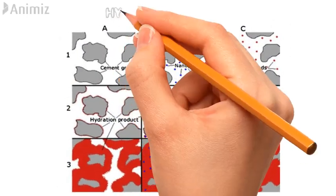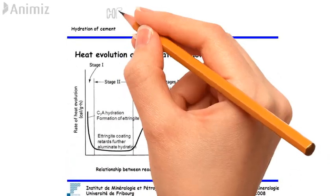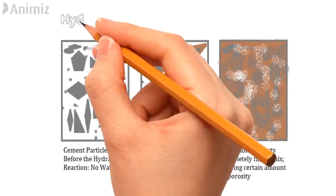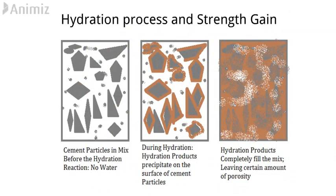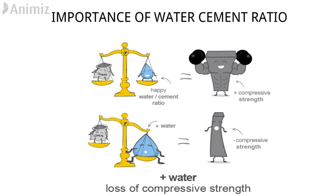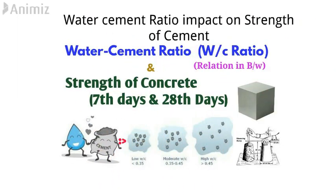In this module, we will also understand about the hydration of cement — that is, when water is added to cement, how the chemical reactions take place, how the hydration process proceeds, and how the heat of hydration is released during these chemical processes. We will also understand how the hydration process results in the strength gain of cement, and what is the importance of the water-cement ratio and how it is directly related to the strength of the cement.